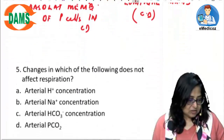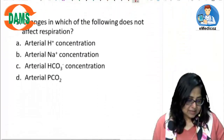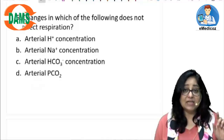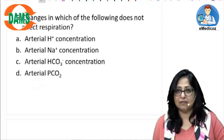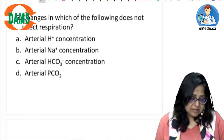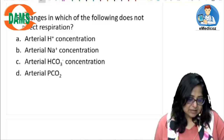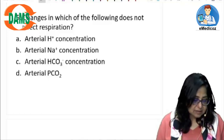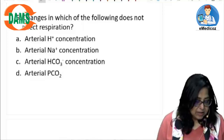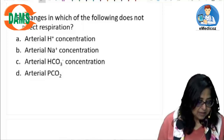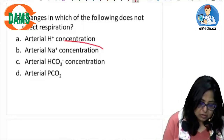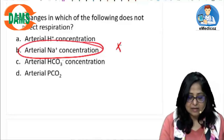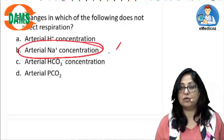Let's have a look at the next question. This says: changes in which of the following does not affect respiration? The options are arterial H+, arterial sodium, arterial bicarbonate, or arterial pCO2. Changes in arterial sodium concentration has no effect on either the peripheral or the central chemoreceptors.